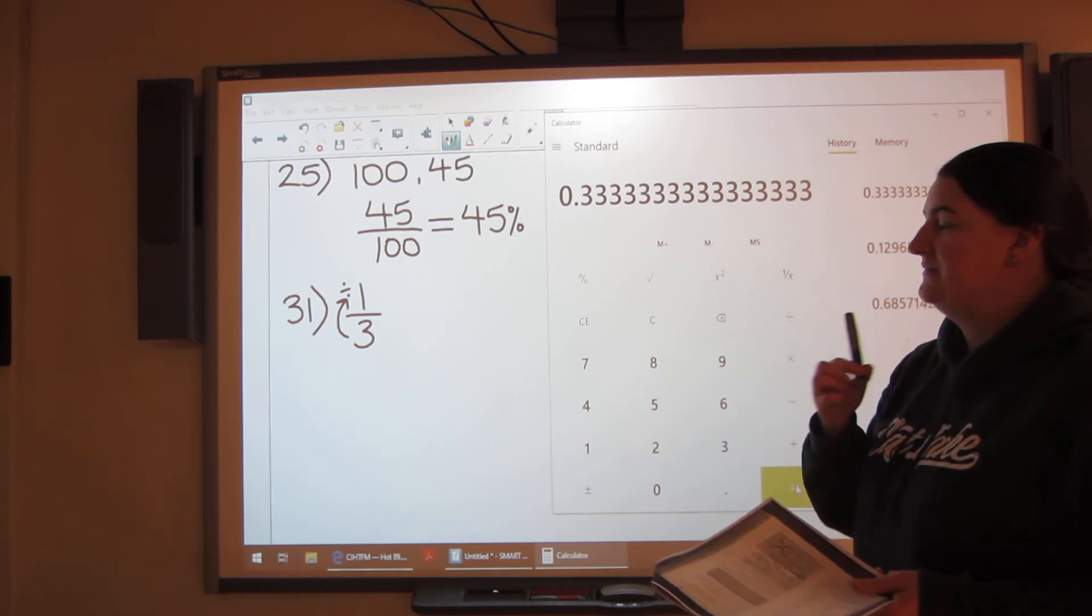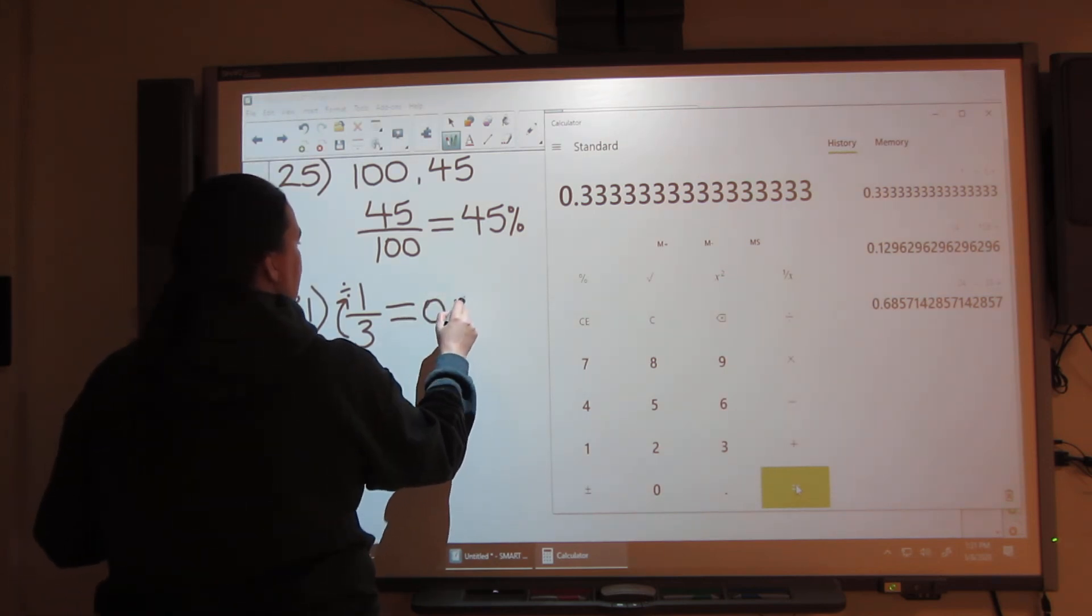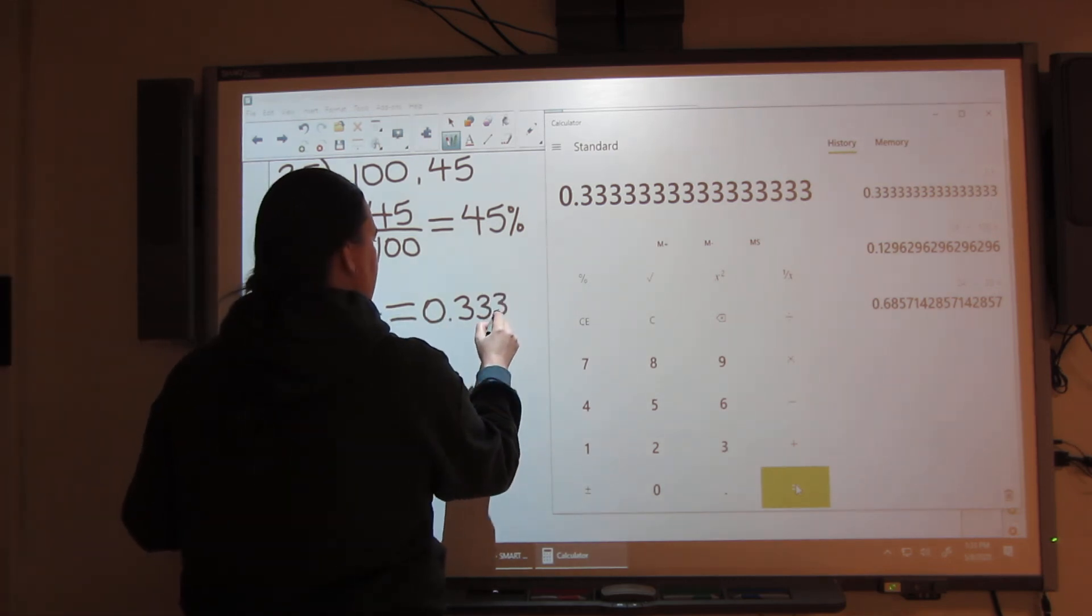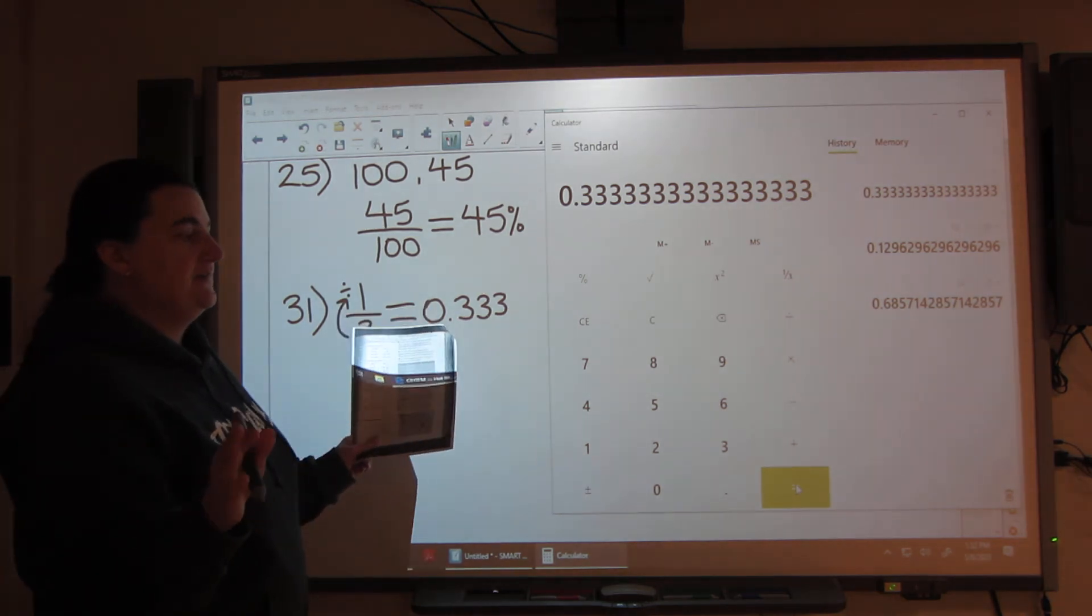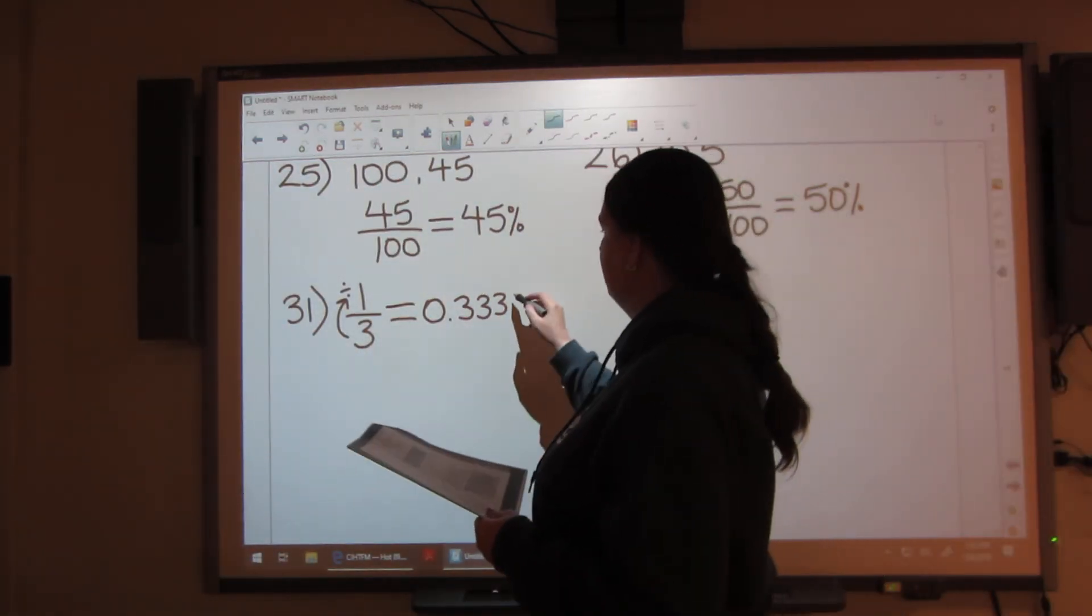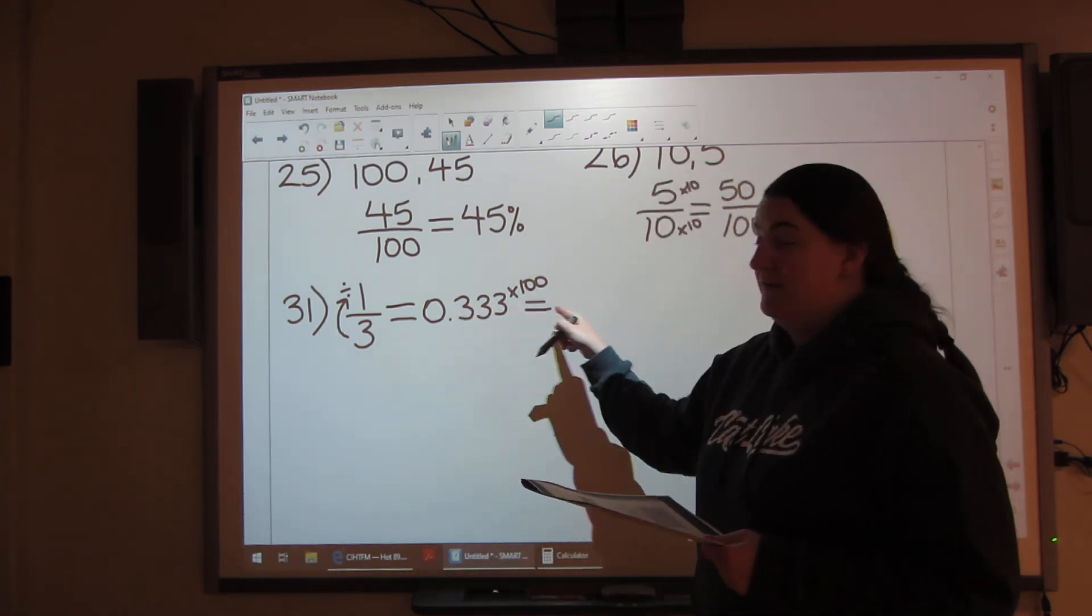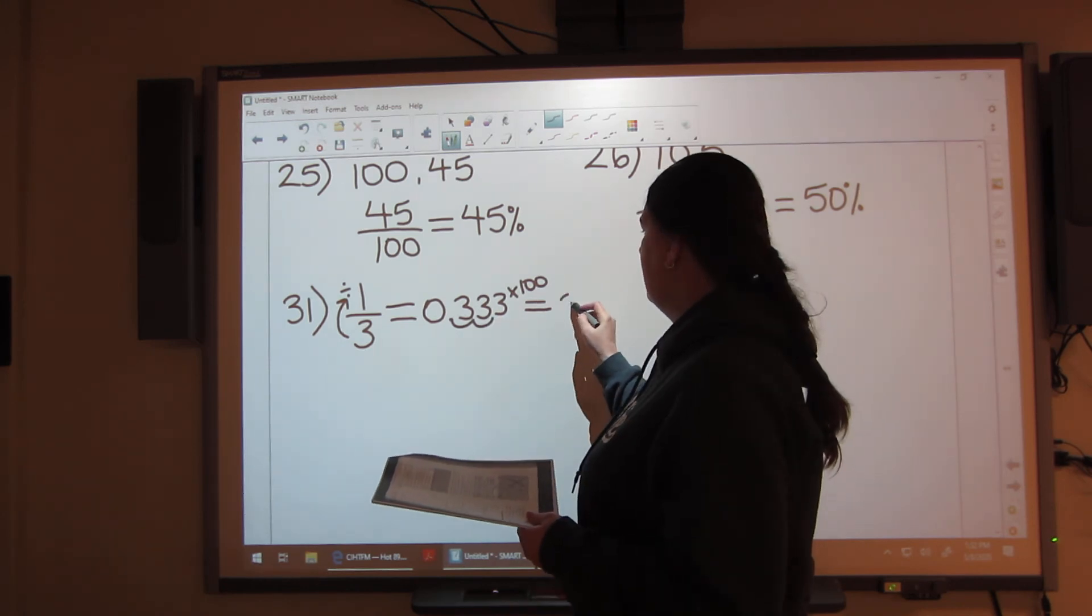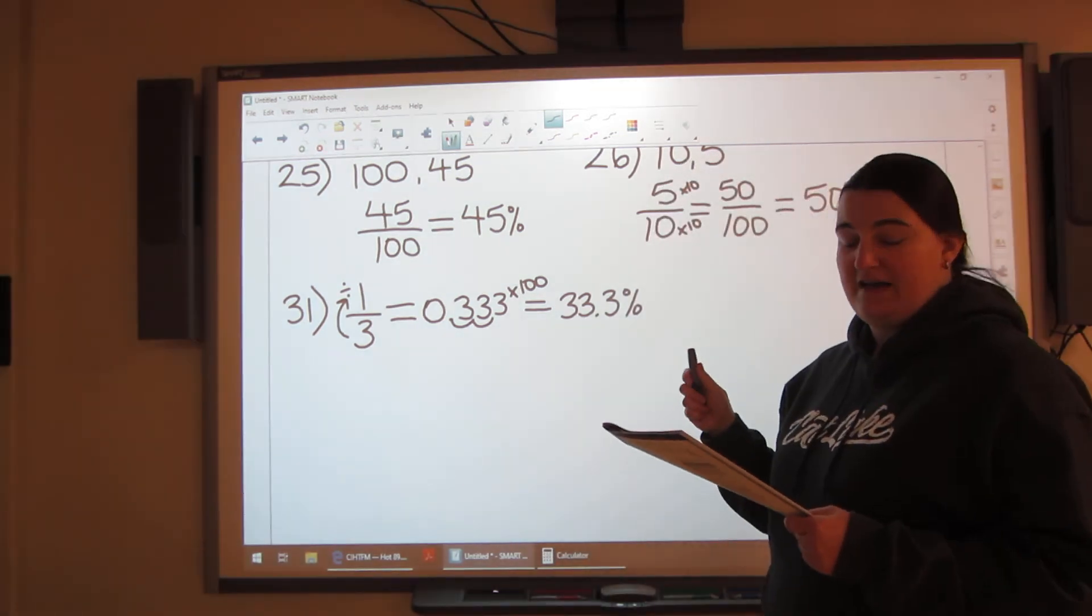We still need to multiply by 100. So let's first of all equals 0.33. And it says to the nearest tenth, so let's add another one just in case. Now, 333. So we know it goes 3 forever. Don't forget that this is the decimal. It's still asking you to do it to a percent. So 0.33333 times 100. Move that decimal.